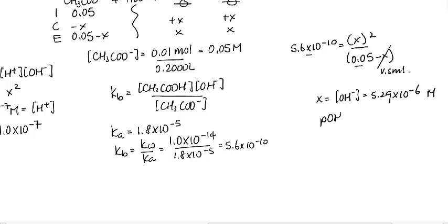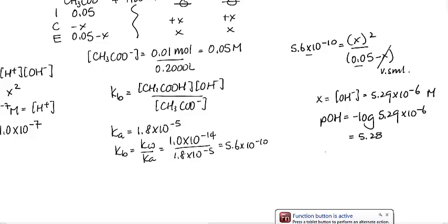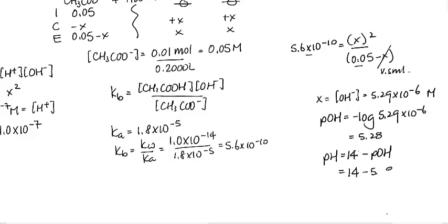So we can go ahead and find the pOH, which is going to be negative log of 5.29 times 10 to the minus 6. And we get 5.28. So in order to find the pH, what we have is 14 minus pOH. So in this case, it will be 14 minus 5.28. And our final answer is 8.72. So as you can see, when we look back to this calculation, indeed,